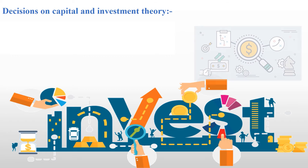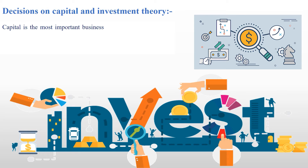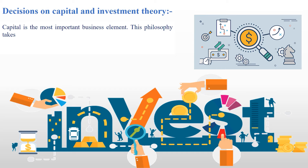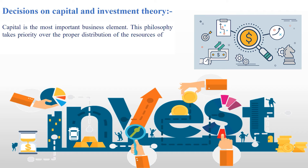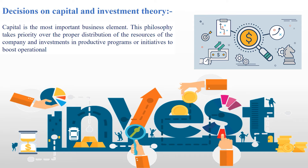Decisions on capital and investment theory. Capital is the most important business element. This philosophy takes priority over the proper distribution of the resources of the company and investments in productive programs or initiatives to boost operational performance.